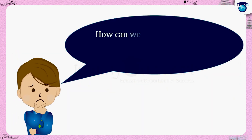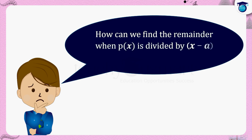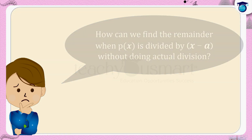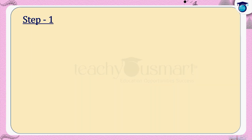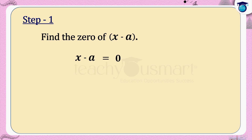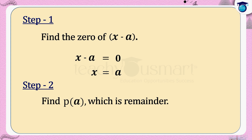So how can we find the remainder when p of x is divided by x minus a without doing actual division? Let's find it by following some steps. Step one: find the zero of x minus a — put x minus a equals zero, that is x equals a. Step two: find p of a, which is the remainder. That is r equals p of a.